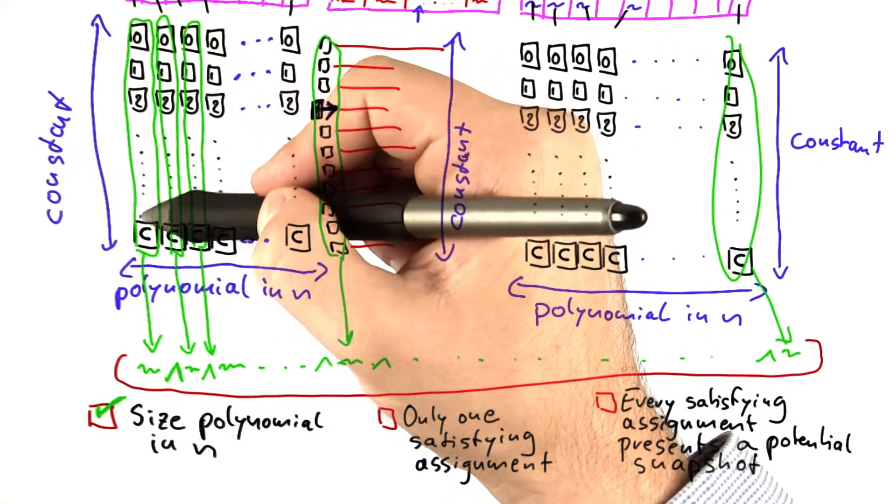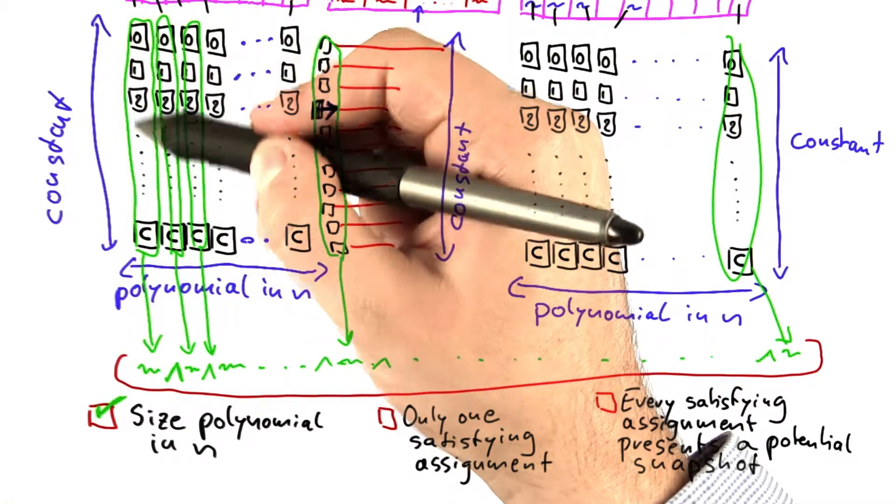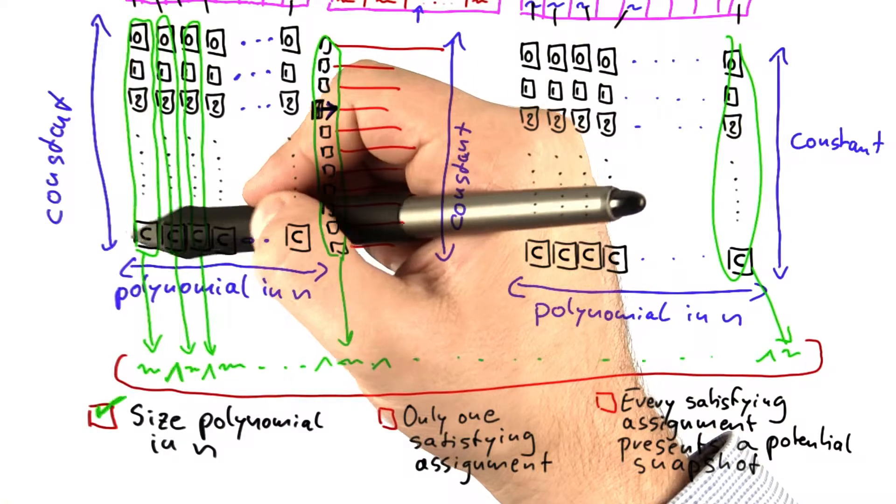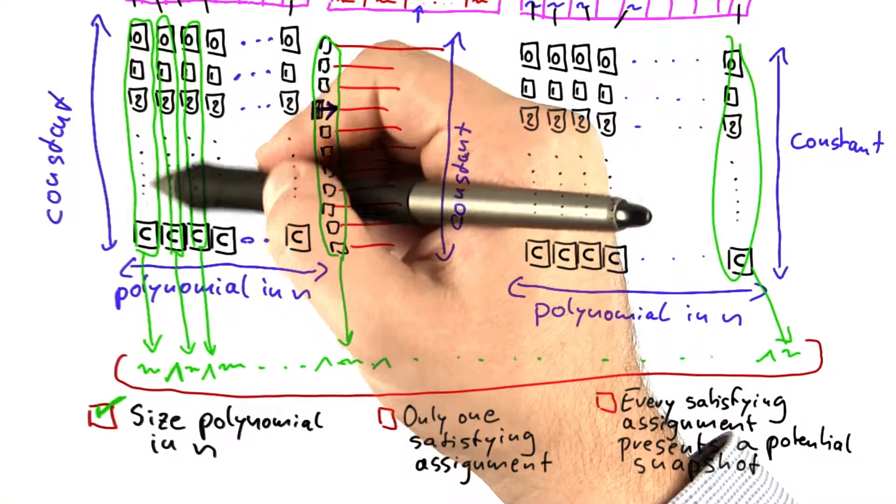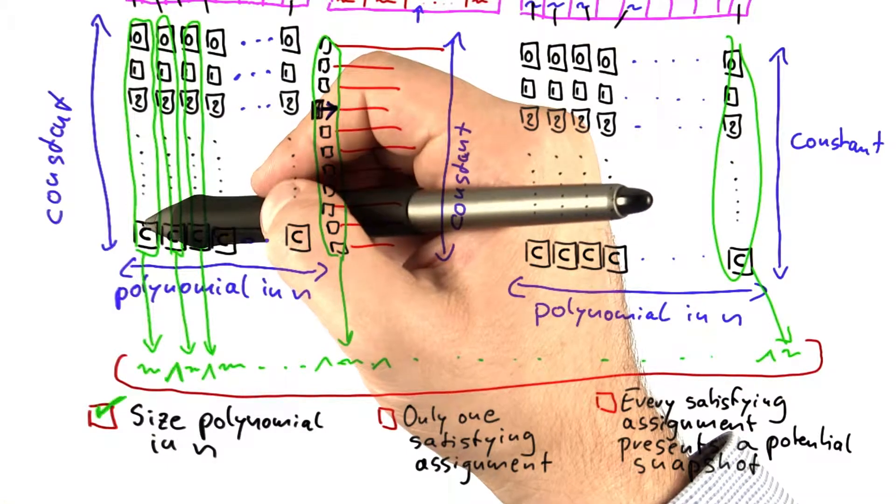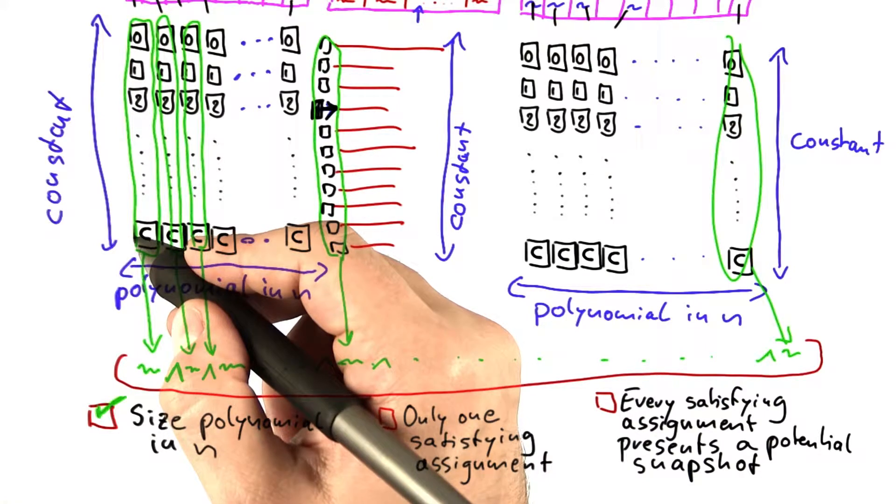if you want to ensure that for a constant number of variables, only exactly one of them can be set to true, then the resulting formula is about the square of the number of variables that you have. And since we have a constant number of variables, each formula here is about the size of the square of that constant.